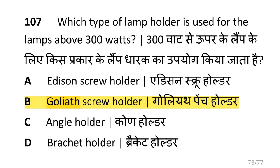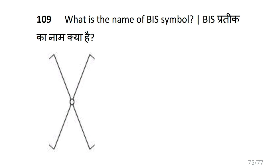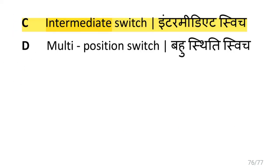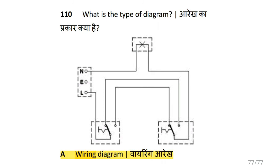Which type of lamp holder is used for lamps above 300 watts? That is Goliath screw holder. What is the expansion of AWG? That is American wire gauge. What is the name of this BIS symbol? That is intermediate switch. What is the type of diagram? That is wiring diagram.